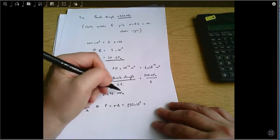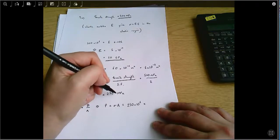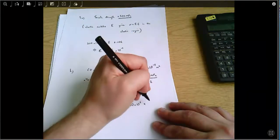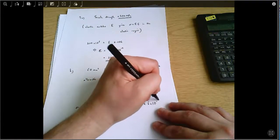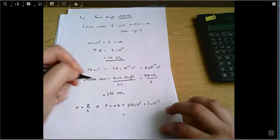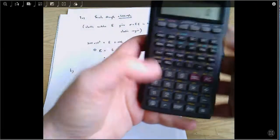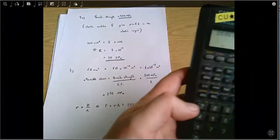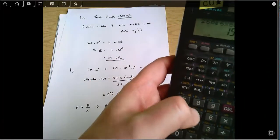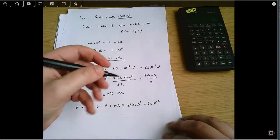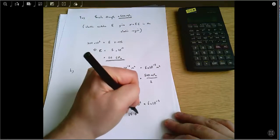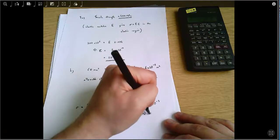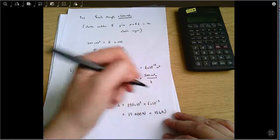Mega, remember, gives me a prefix of 10 to the 6, multiplied by 6 times 10 to the minus 5, which is the area. 250 E6 times 6 E minus 5, and that gives me a force of 15,000 newtons, which equals 15 kilonewtons.